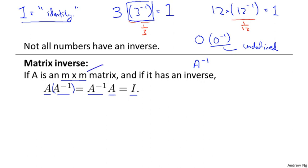Only matrices that are M by M for some value of M have an inverse. A matrix that is M by M is also called a square matrix, and it's called square because the number of rows equals the number of columns. It turns out only square matrices have inverses, so if A is a square matrix and it has an inverse, then it satisfies this equation over here.